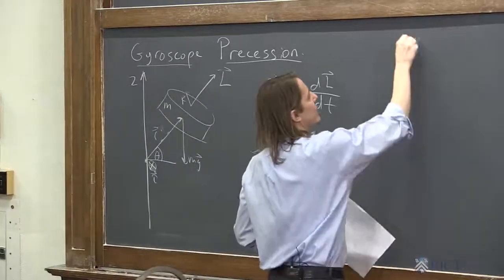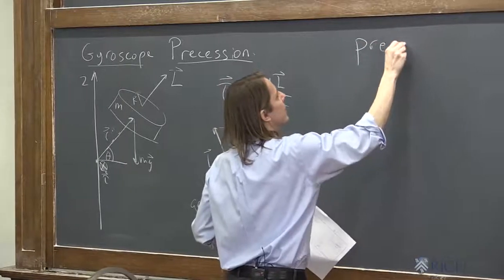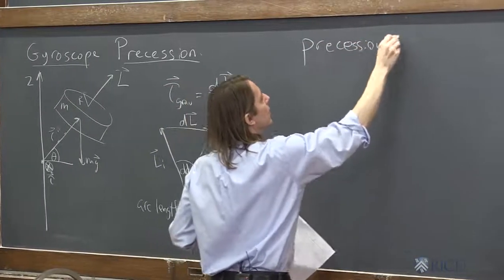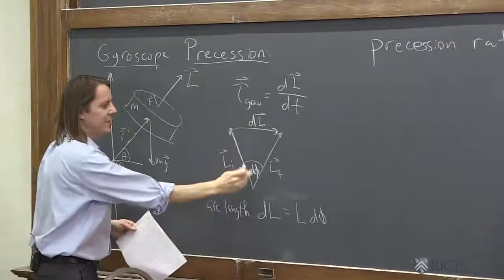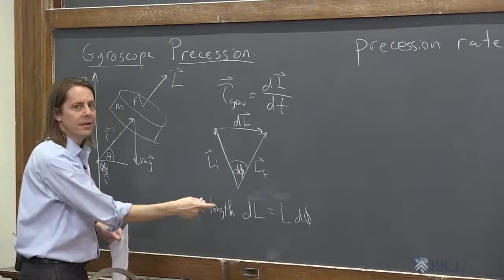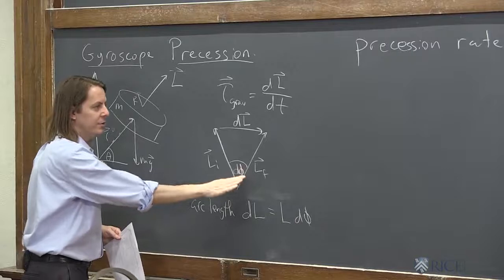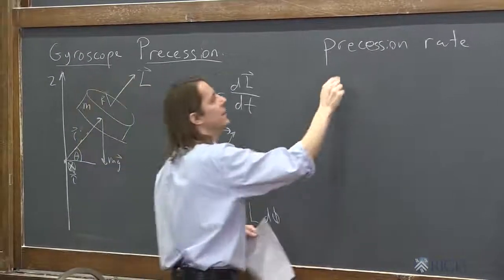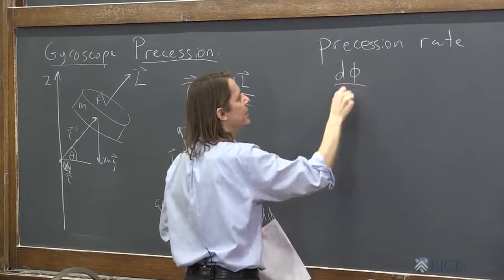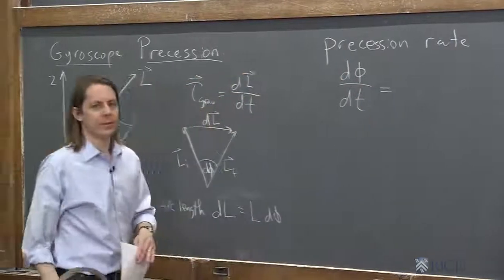So now we want the precession rate. Let's see if we can calculate it. Now if we look at this diagram, we know what it is, it's d phi dt. How much does this angle change in the time dt that corresponds to dL? So the precession rate we just define as d phi dt.